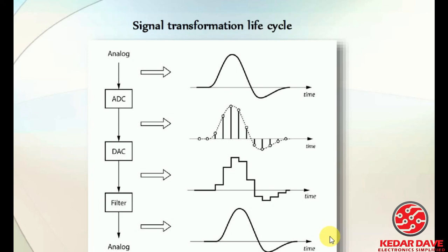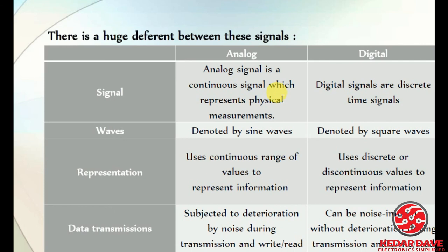This is the signal transformation lifecycle. The analog signal is converted to a discrete digital signal through analog-to-digital conversion, and then digital-to-analog conversion reconstructs the signal. Once converted back, it will have approximately the same value as the original, but there will be some losses due to transmission between these stages. This illustrates the complete difference between analog and digital conversion.